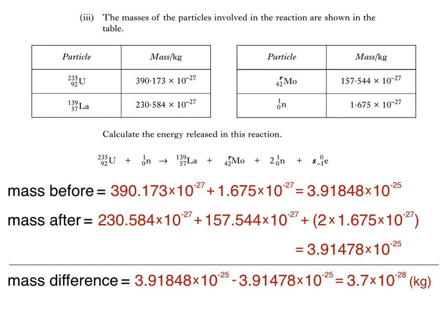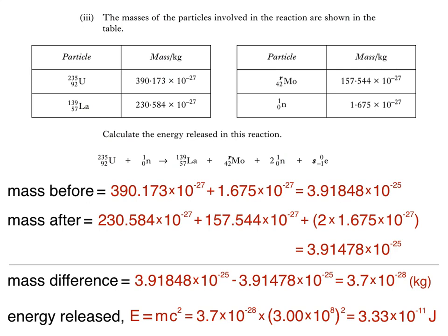The final step is to substitute this loss in mass into the equation E equals mc squared to find the energy released. C is the speed of light in a vacuum. You'll find that in the data sheet at the front of the paper. That gives us 3.7 times 10 to the negative 28 times 3 times 10 to the power of 8 squared, which gives us an answer of 3.33 times 10 to the negative 11 joules.